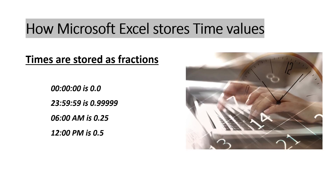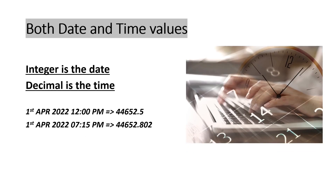Any moment of the day can be calculated as a fraction which can be converted into the corresponding time. If we have both date and time, the integer is the date and the fraction is the time. For example, 1st April 2022 12 PM: the date converts to serial number 44652 and 12 PM is 0.5, so the whole value is 44652.5. Similarly, 1st April 2022 at 7:15 PM would be 44652.802.